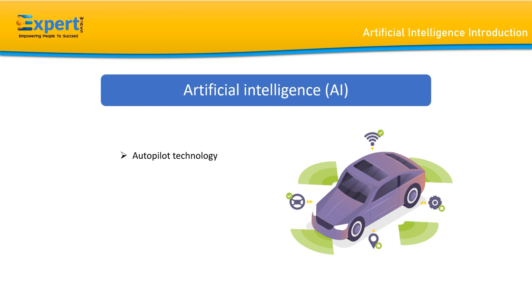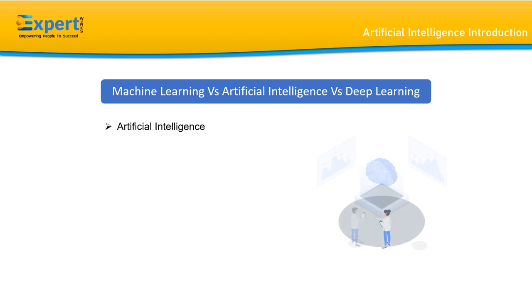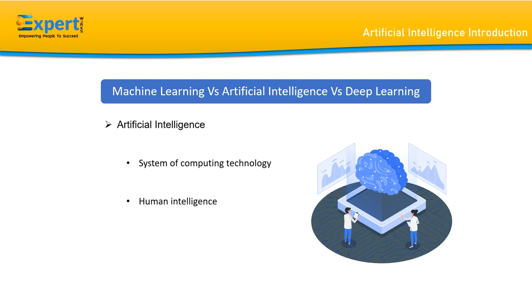You might get confused between machine learning and AI, or deep learning and AI. AI refers to the entire system of computing technology exhibiting anything remotely resembling human intelligence. AI systems can include a problem-solving application to something equivalent to the fictional Pixar character WALL-E. Machine learning, on the other hand, is a subset of AI applications that learns by itself.